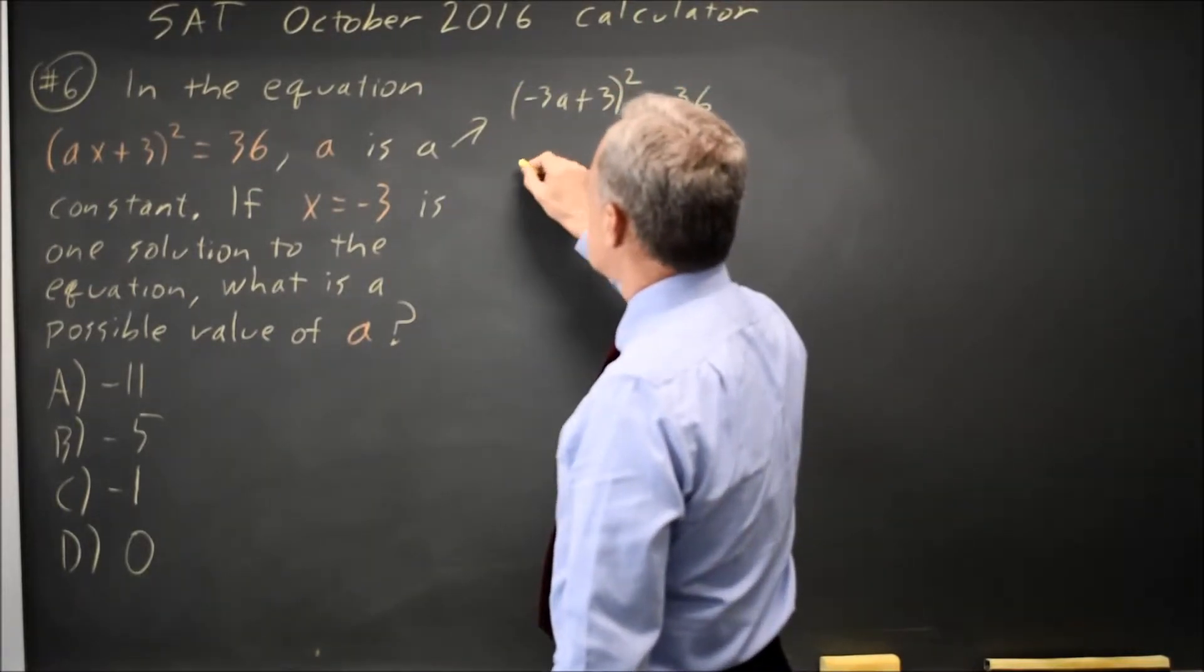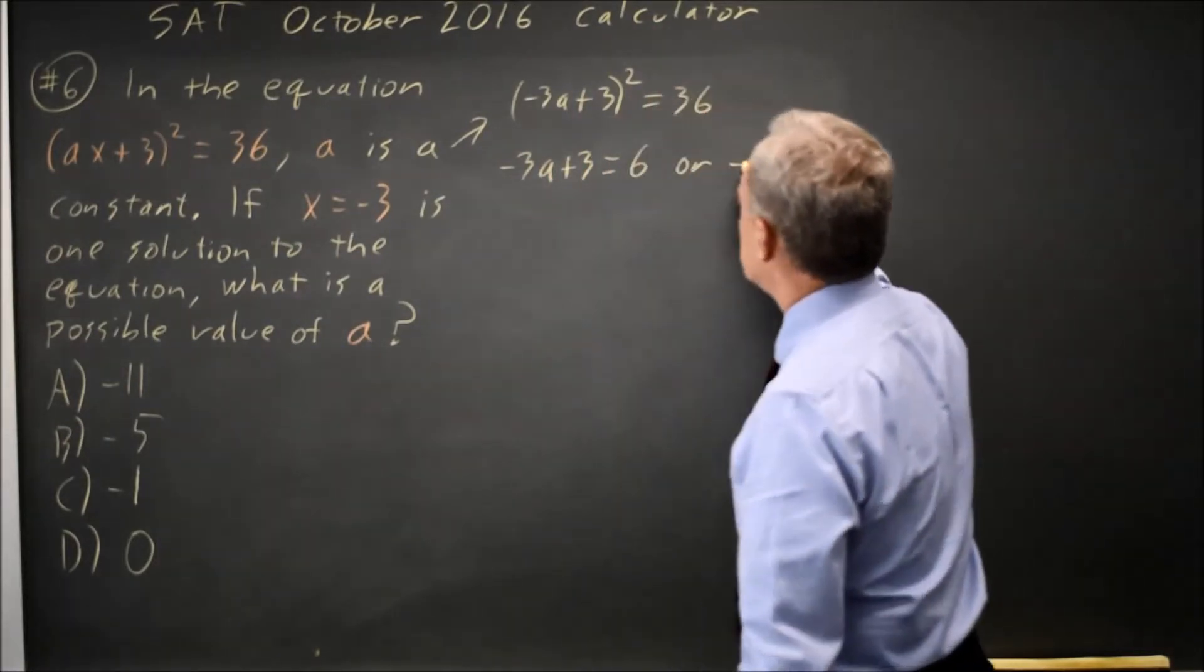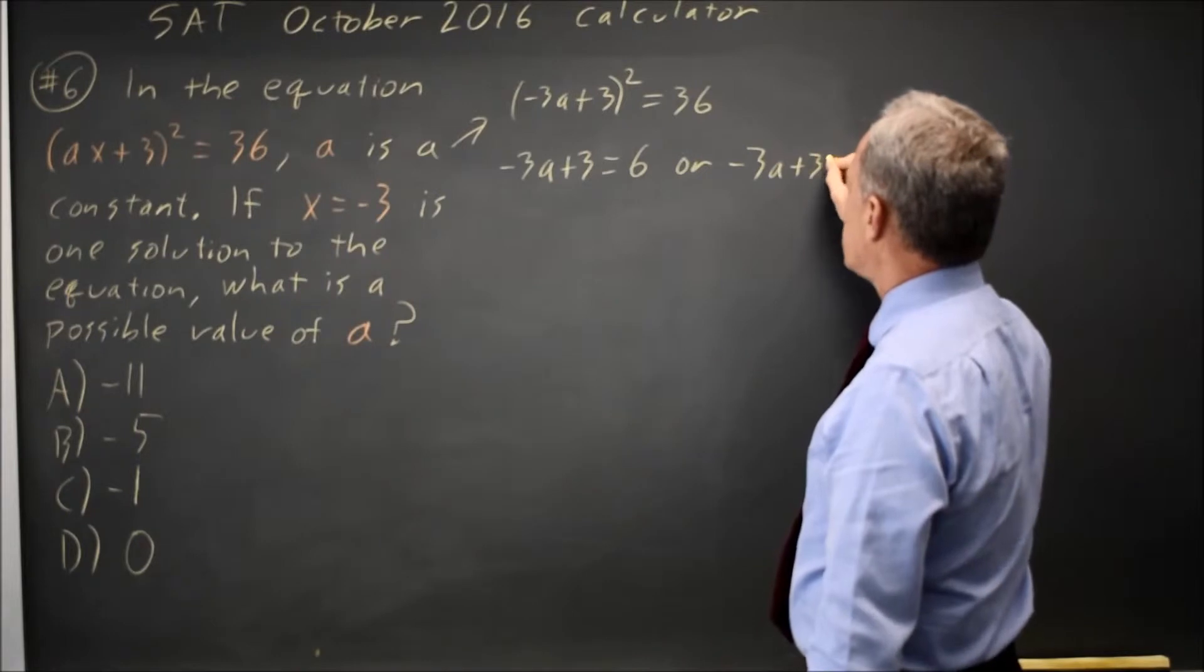Square rooting both sides, I get negative 3a plus 3 equals 6 or negative 3a plus 3 equals negative 6.